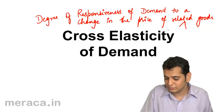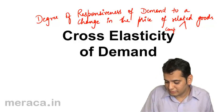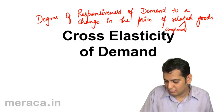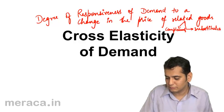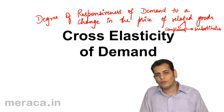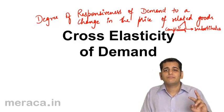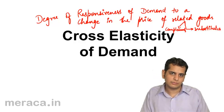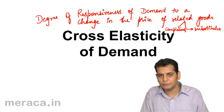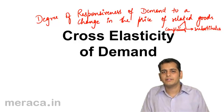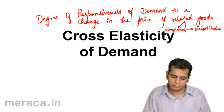The first type of related good is complements, and the other type is substitutes. Correspondingly, in cross elasticity we have two types: the cross elasticity of substitutes and the cross elasticity of complements.